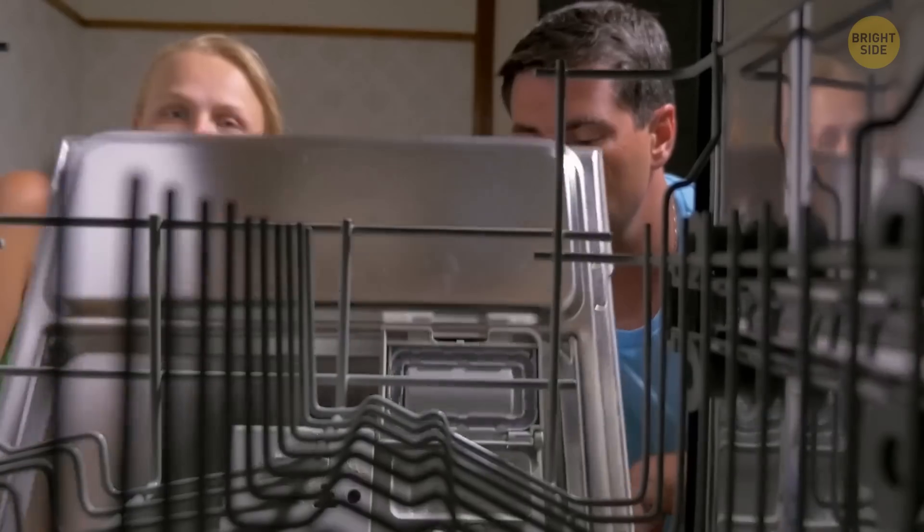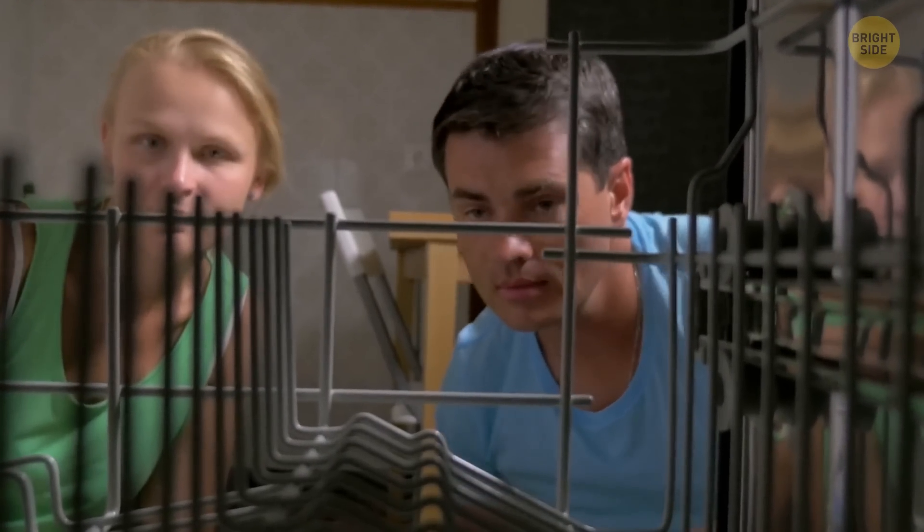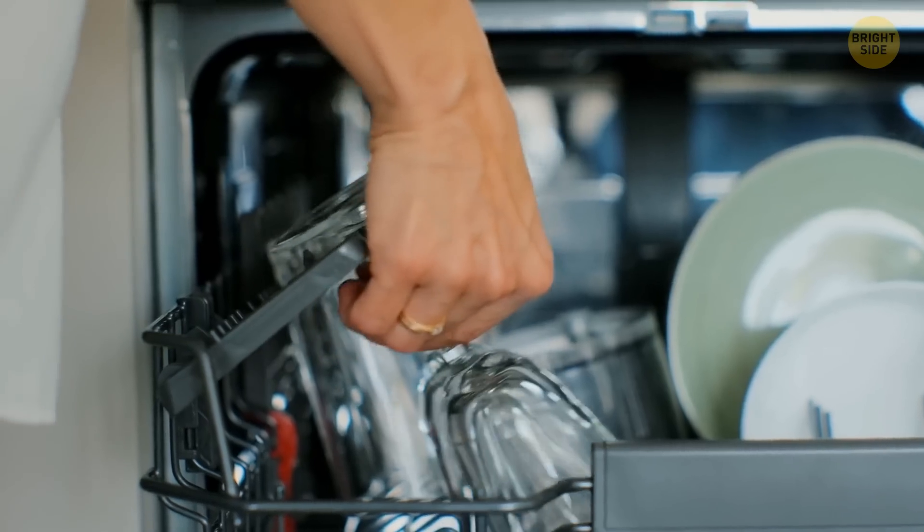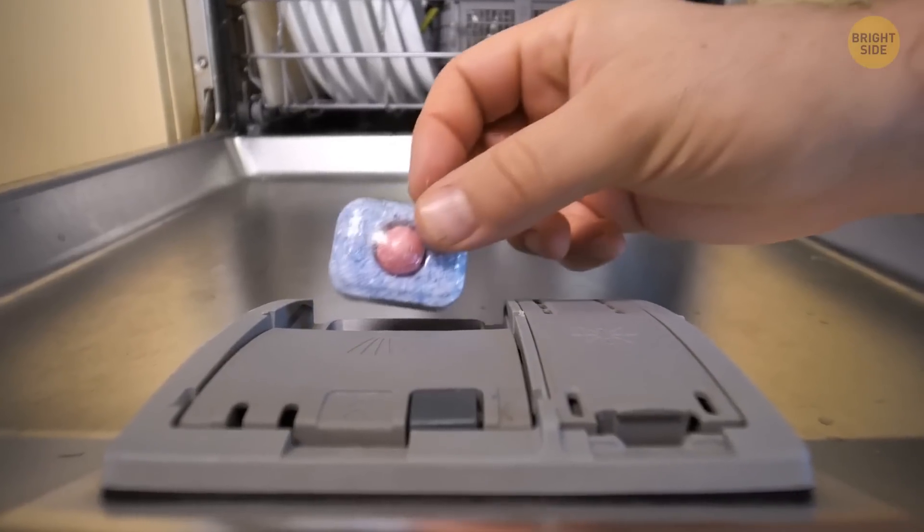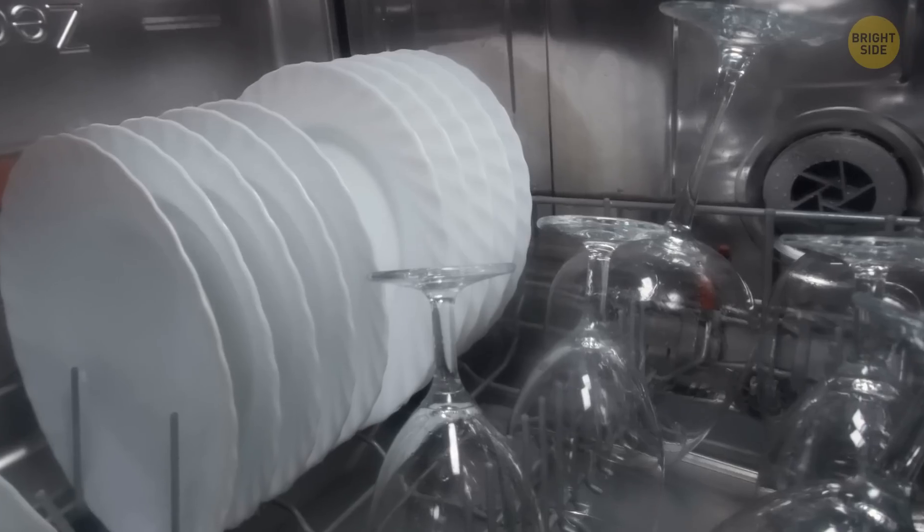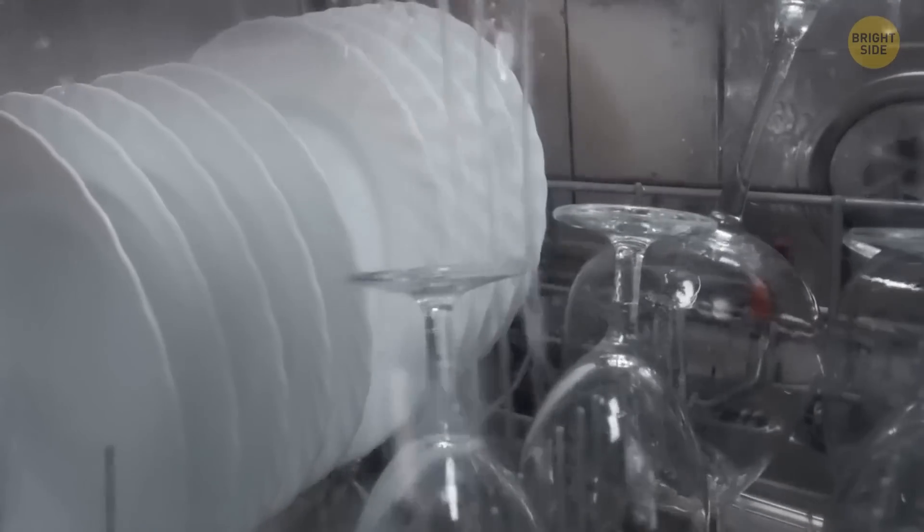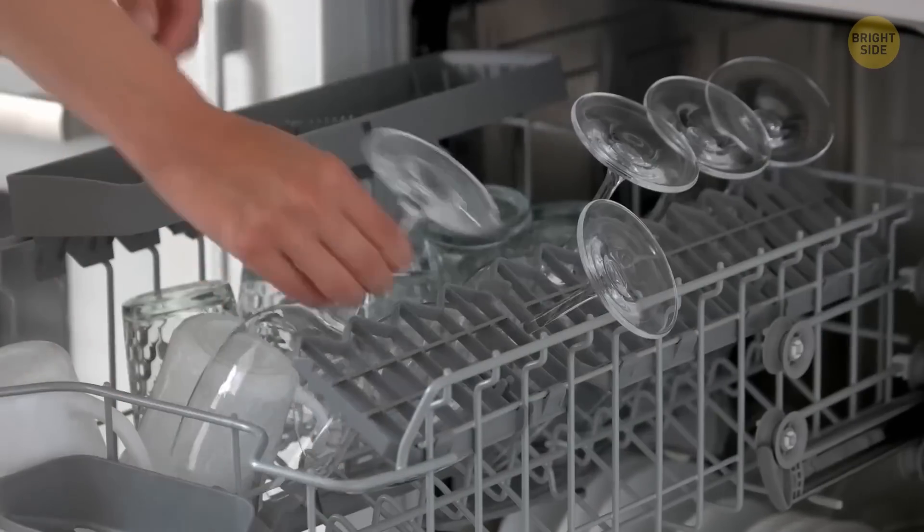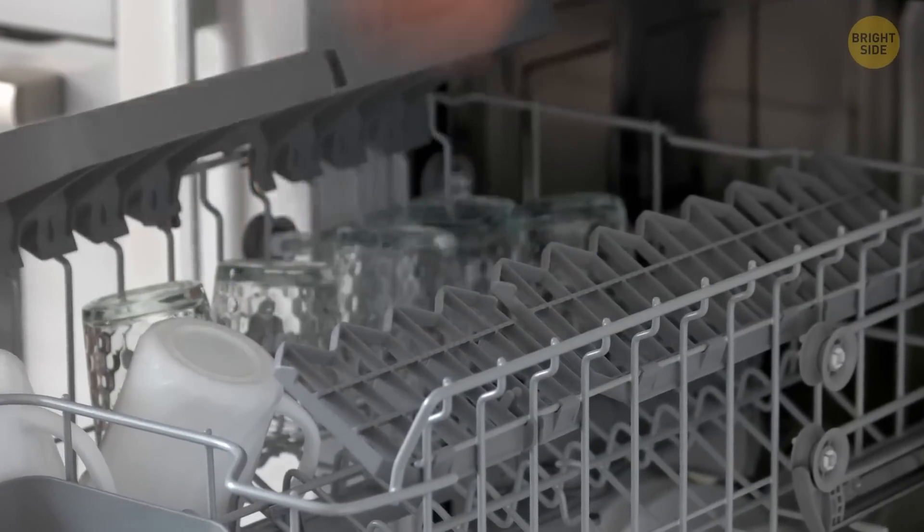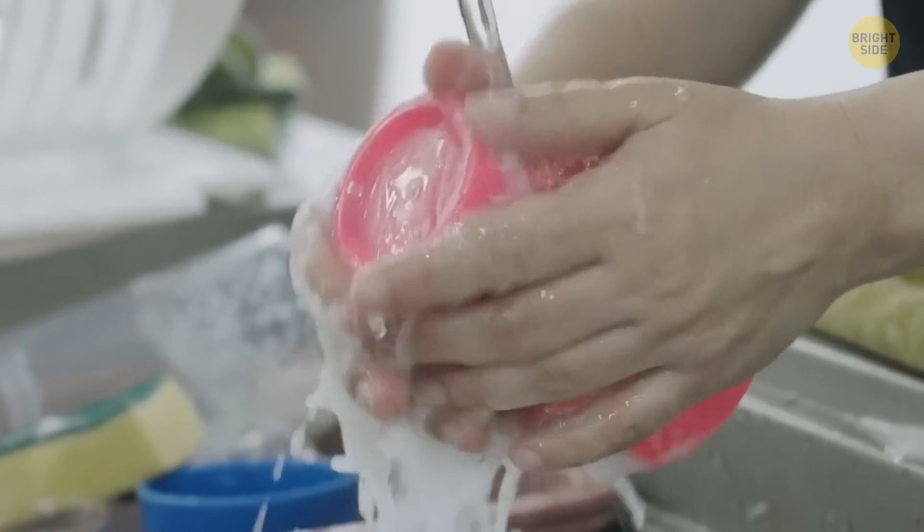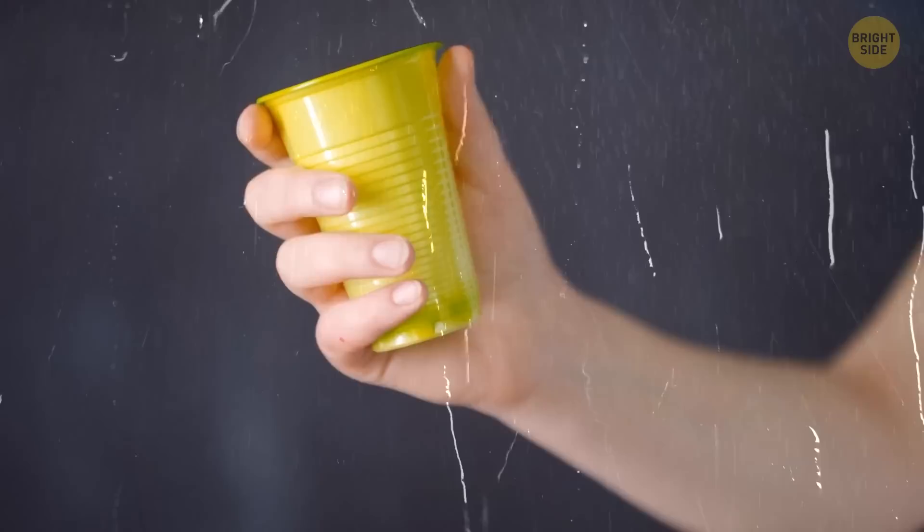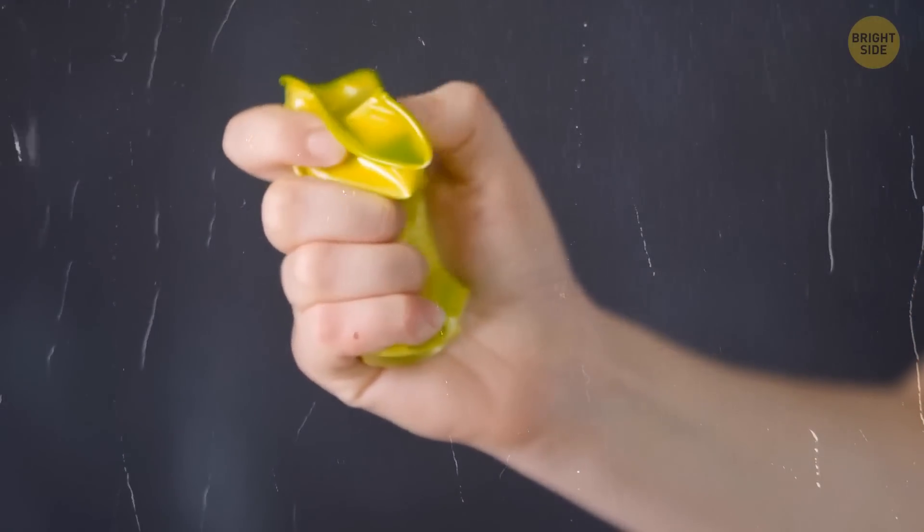When you place plastic items in the dishwasher, you can see water droplets stay on them after the washing. Dishwashers spray jets of detergent and water at temperatures that are higher than you'd use when doing the dishes yourself. When the washing cycle is finished, the water evaporates and the crockery gets dry. But plastic things cool down faster because this material has a lower density, and water doesn't have enough time to evaporate.